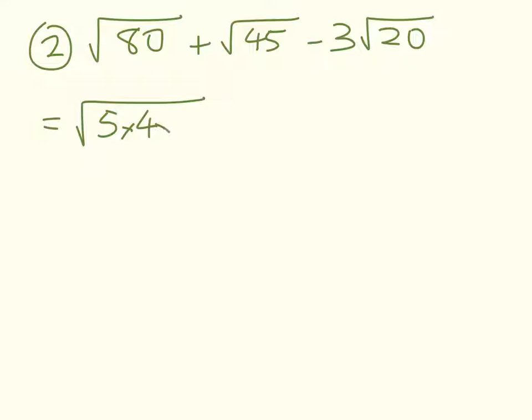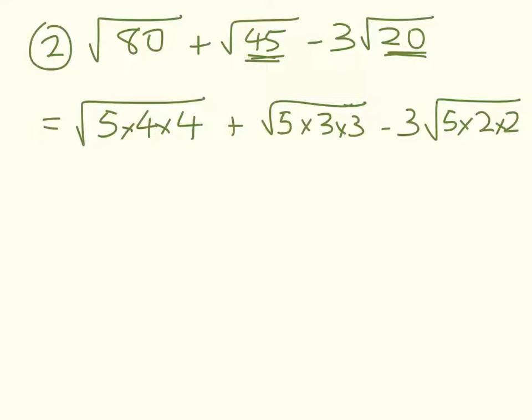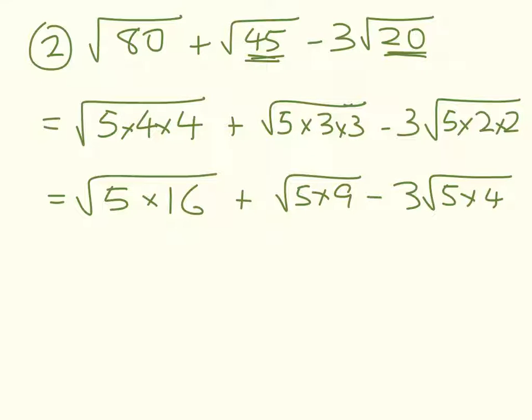I'll write them out the really slow way first: 5 times 4 times 4 plus in here I've got a 9 hiding, so 5 times 3 times 3 minus 3 times 4 hiding, so 5 times 2 times 2. Now most of you probably thought about that like this: that's 5 times 16 plus 5 times 9 minus 3 root 5 times 4.